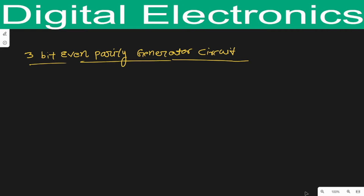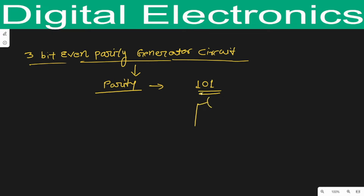Here we will discuss even parity generator. Before starting this topic, we have to know what is the meaning of parity. A parity bit is nothing but an extra bit that is added with the message and transmitted towards the receiver. For example, suppose the message is 101. Before transmitting this message from the transmitter, we add one extra bit — this extra bit added with the message is known as the parity bit.